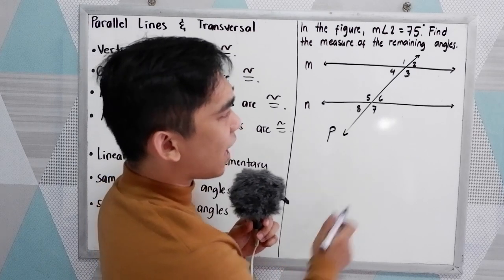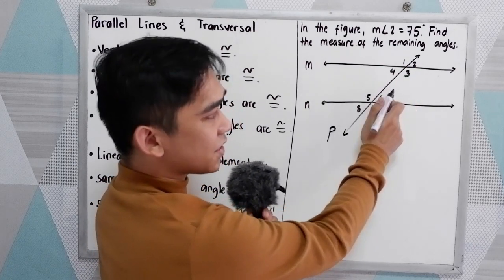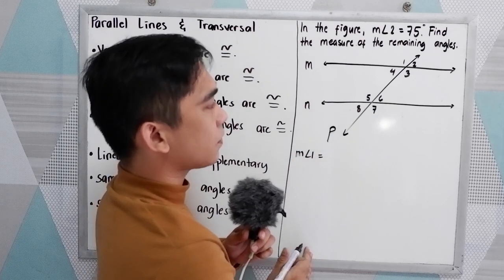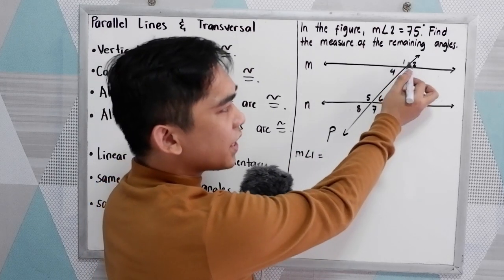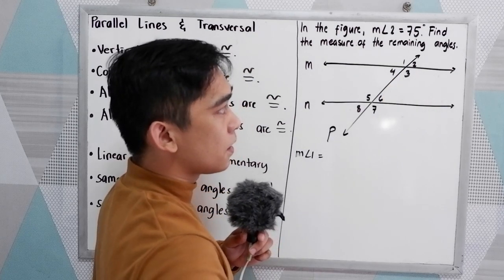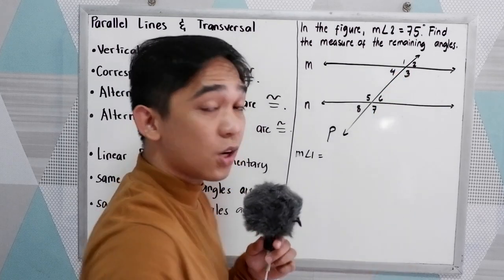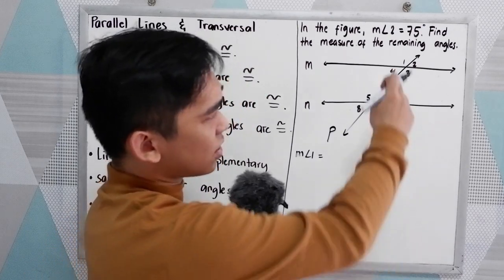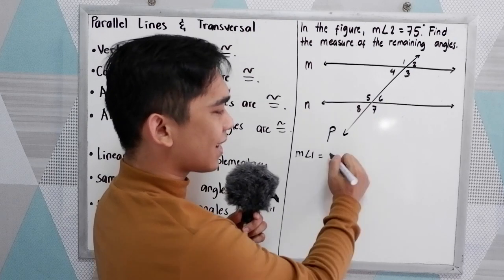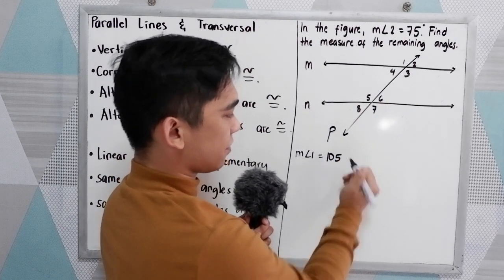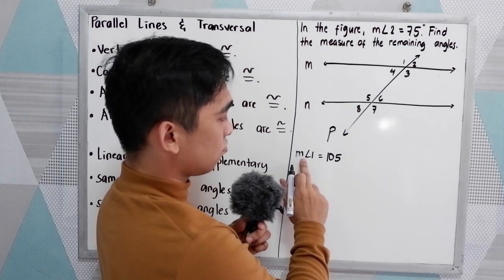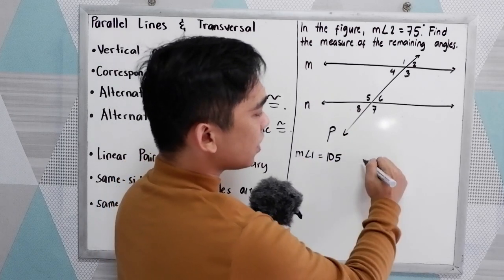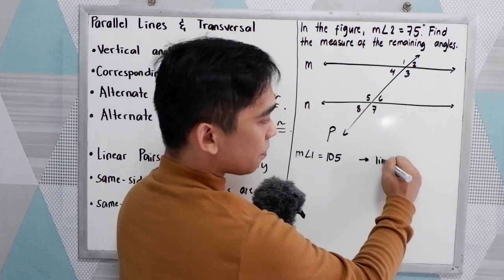We're going to find angles 1, 3, 4, 5, 6, 7, and 8. Let's start with the measure of angle 1. We know angle 1 and angle 2 are a linear pair, so the sum of angles 1 and 2 is equal to 180 degrees. So 180 minus 75 equals 105. Measure of angle 1 is equal to 105 degrees. Reason: linear pair.